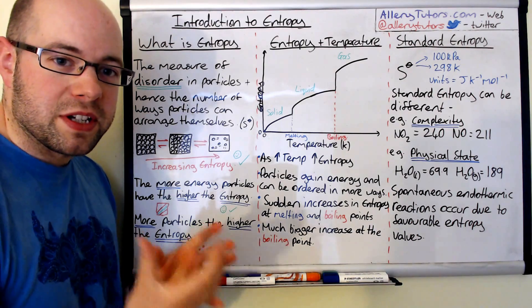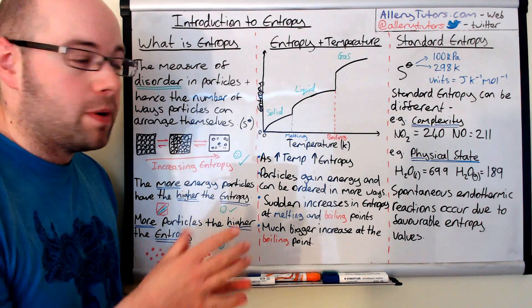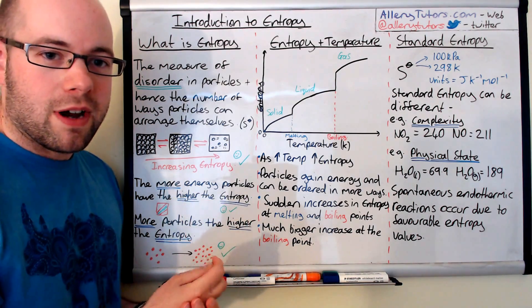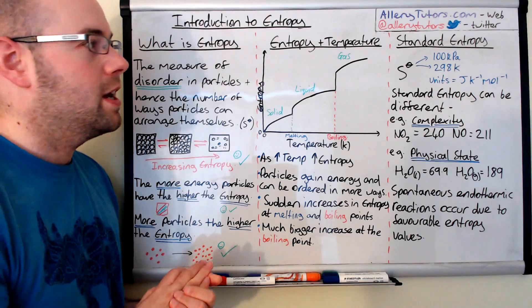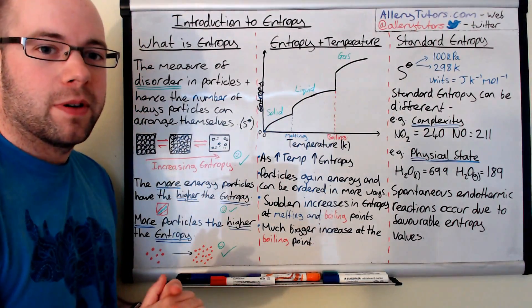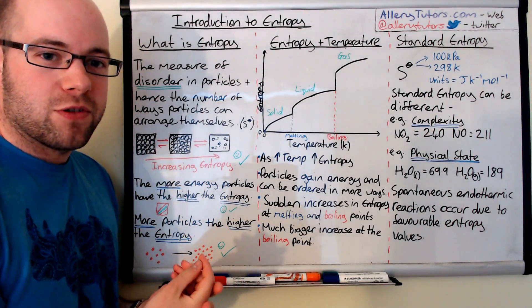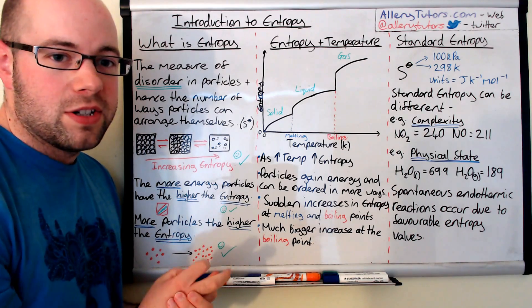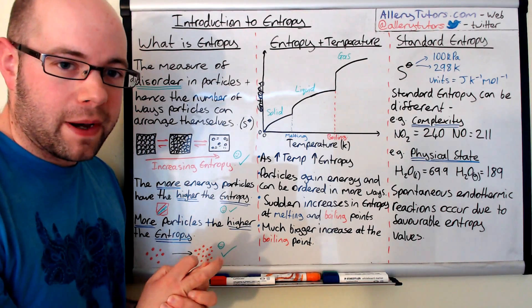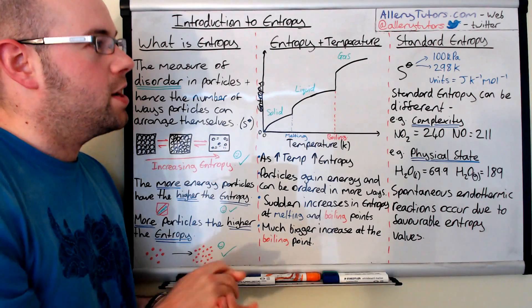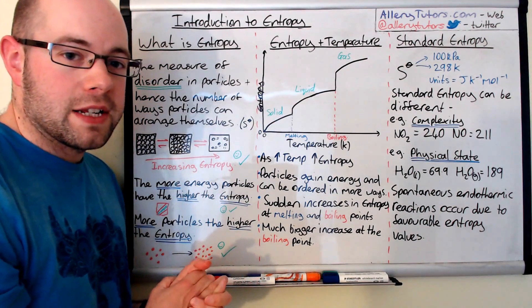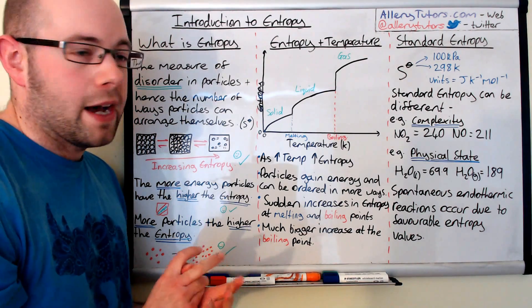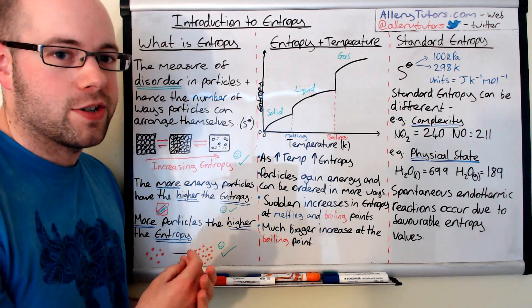Coming to the last bit, which is standard entropy. Like I said before, the letter we use to represent entropy is S. We have the little circle symbol next to it, and that just means—this bit here that looks like a circle—this tells us that entropy is in a standard state. The standard conditions that we apply are 100 kilopascals, which is atmospheric pressure, and 298 Kelvin, which is 25 degrees Celsius.